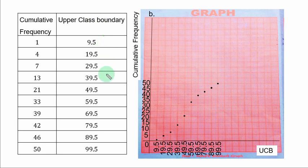So you have all the upper class boundary here, from 9.5 to 99.5. The scale used on the cumulative frequency axis is 1 cm to 5 units.